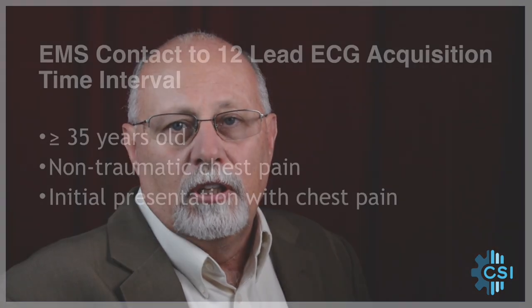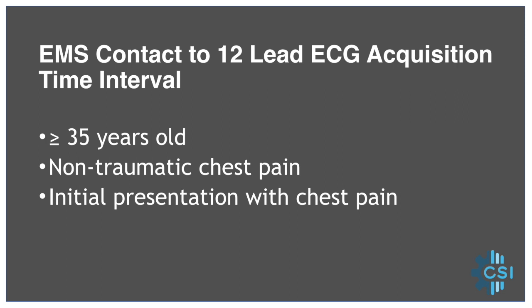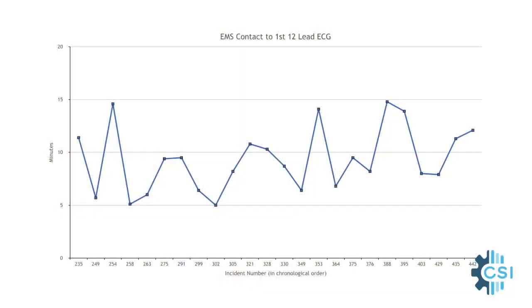Let's look at an example. Many systems of care for STEMI track the time interval between EMS making contact with a patient and the time that the first 12-lead ECG was acquired, if the patient was over 35 years old and presented with non-traumatic chest pain. Those cases are usually pretty clear-cut for needing a 12-lead ECG, so as soon as the patient complains of chest pain without associated trauma, the process of getting the 12-lead should start right away.